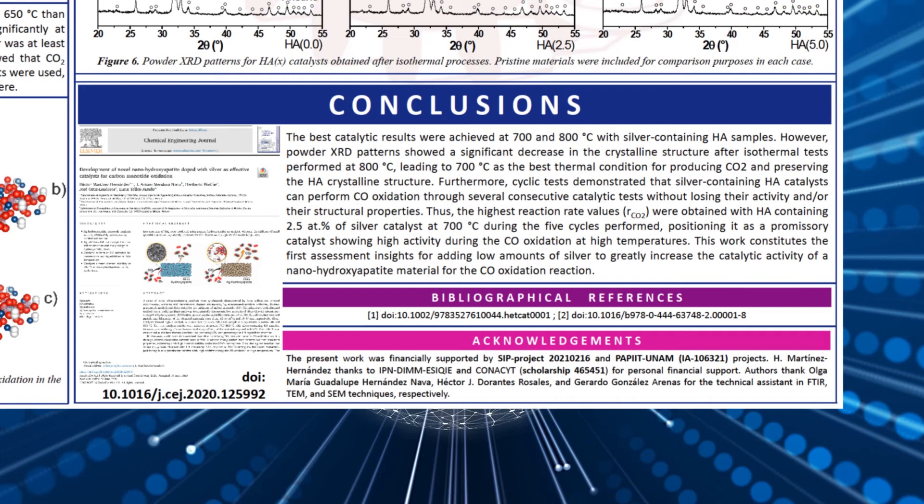The highest reaction rate values were obtained with hydroxyapatite containing 2.5 atomic percentage of silver at 700 Celsius during the five cycles performed. This is a promissory catalyst showing high activity during the carbon monoxide oxidation at high temperature.